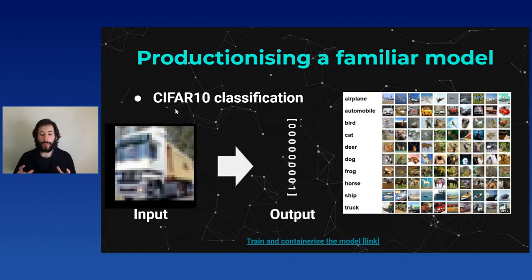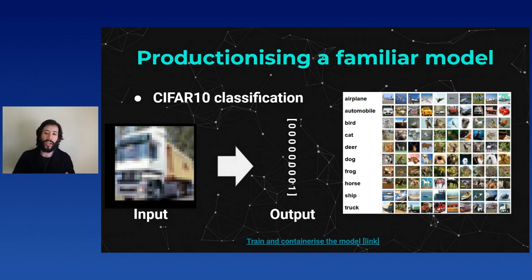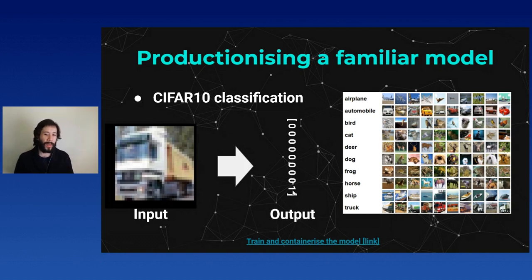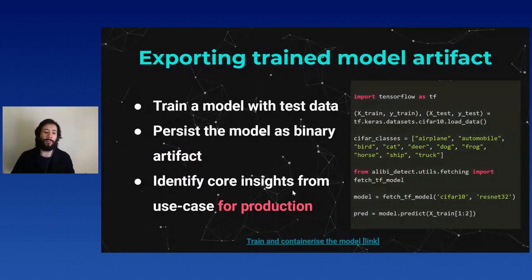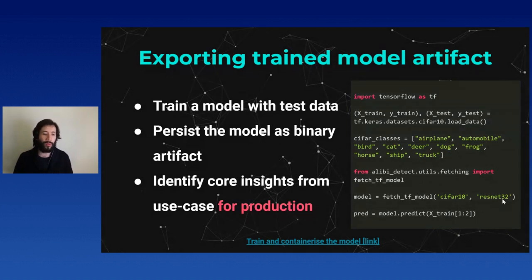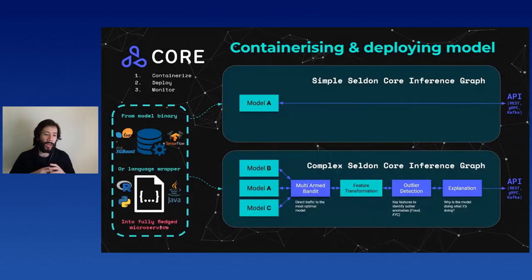We're going to use the hello world of machine learning: CIFAR-10 classification. This is a model that takes an image as input and predicts one of 10 classes — for example, it would predict 'truck' for an image of a truck. Since we focus on the production life cycle, we're not training from scratch, but fetching a pre-trained ResNet-32 CIFAR-10 TensorFlow model. The input is an image and the output is an array indicating the predicted class.